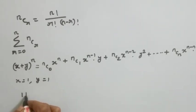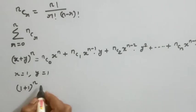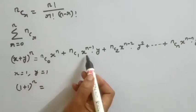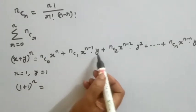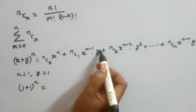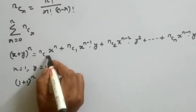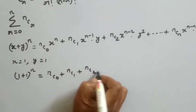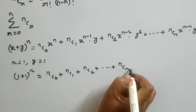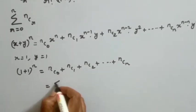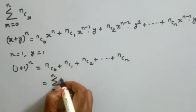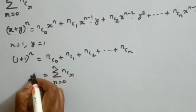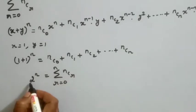We substitute X equal to 1 and Y equal to 1. The left hand side becomes 1 plus 1 to the whole power N, and the right hand side gives NC0 plus NC1 plus NC2 and so on up to NCN. Therefore, the summation R equal to 0 to N of NCR equals 1 plus 1 to the whole power N, which equals 2 power N.